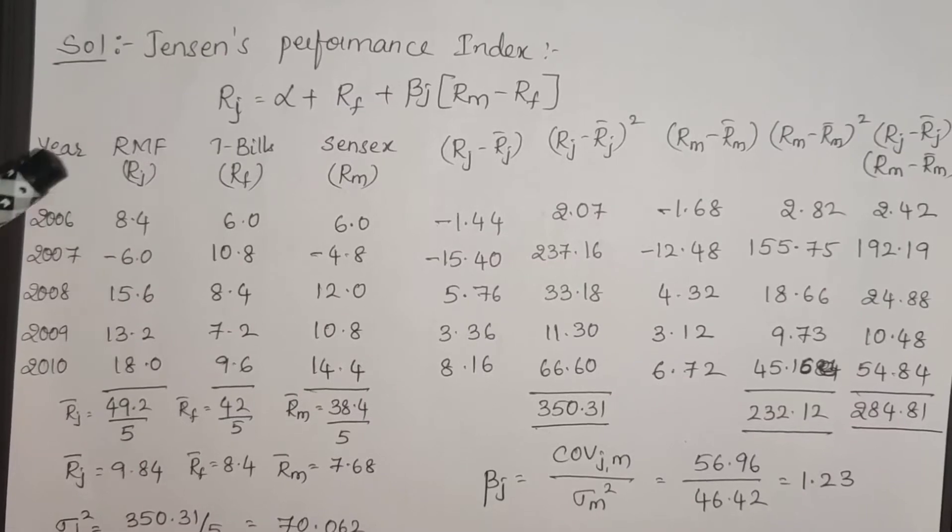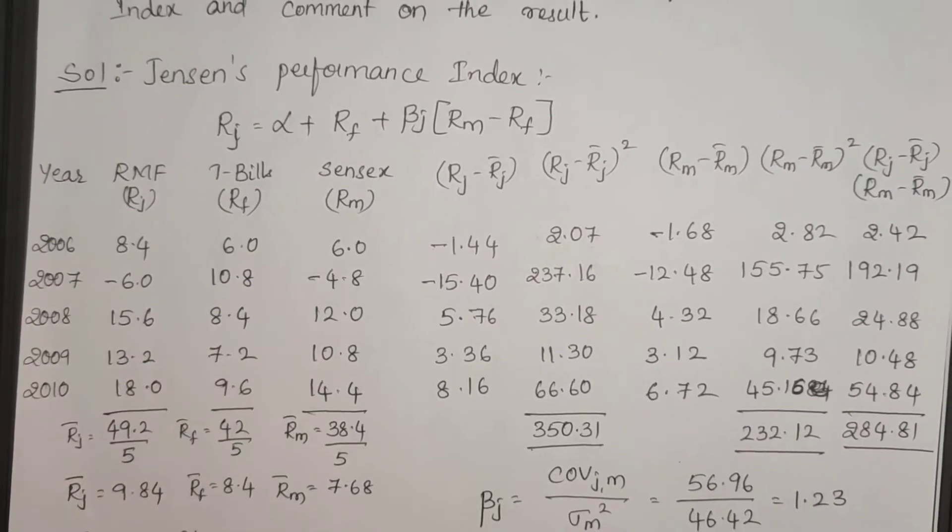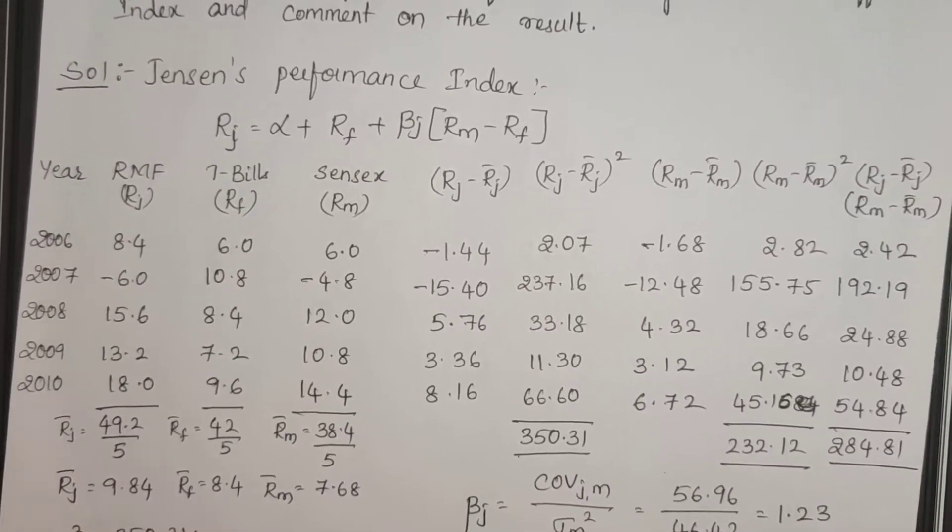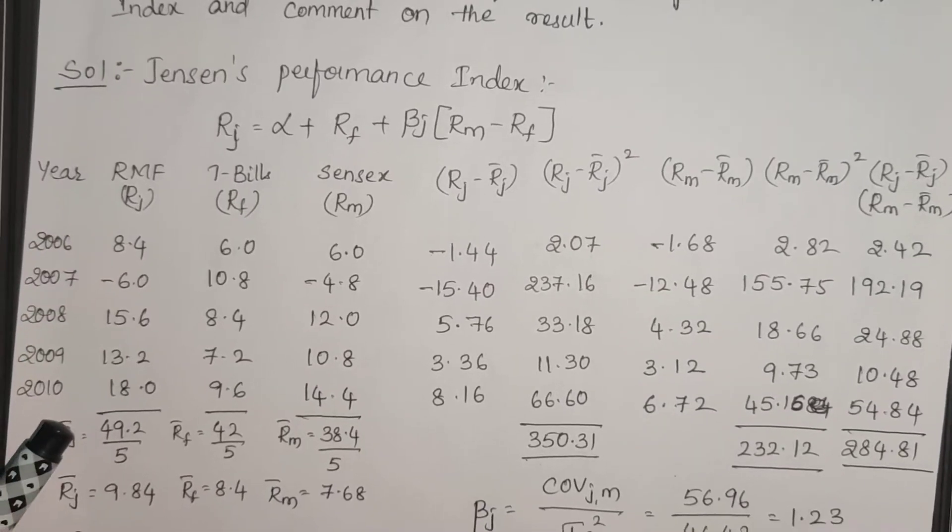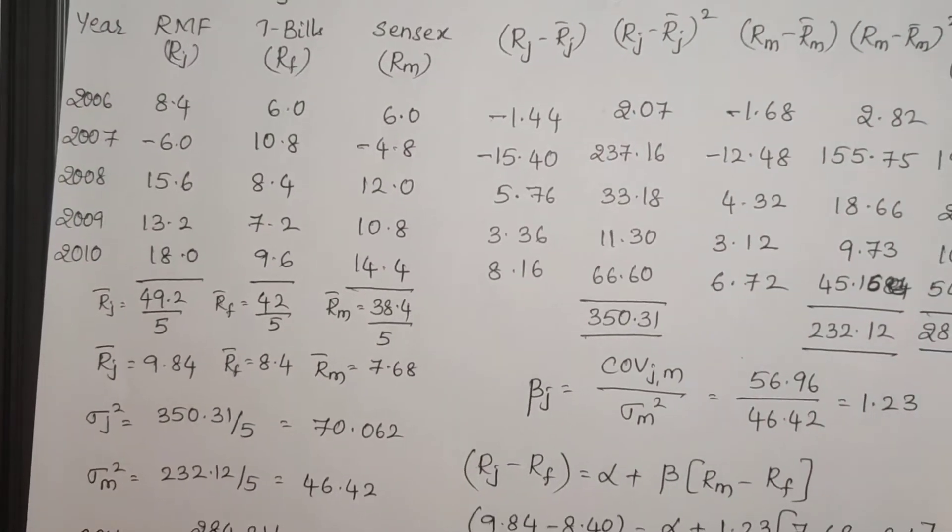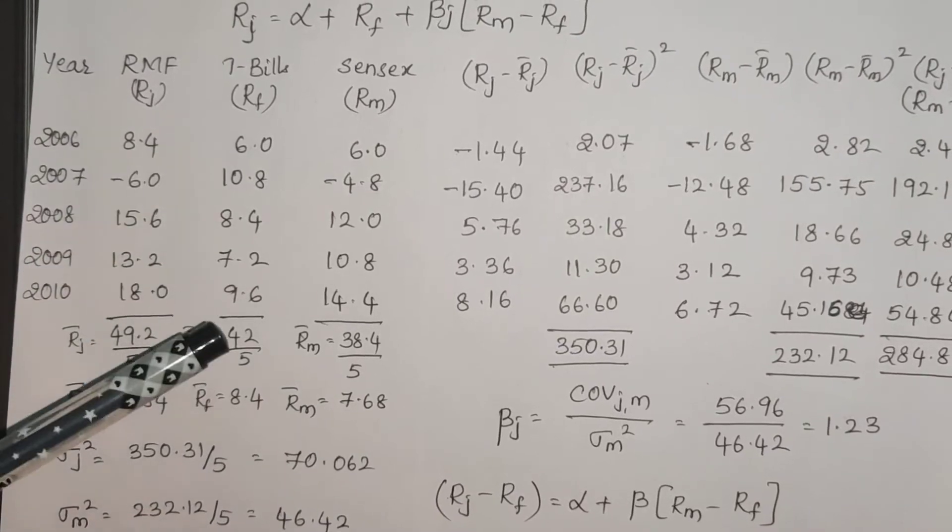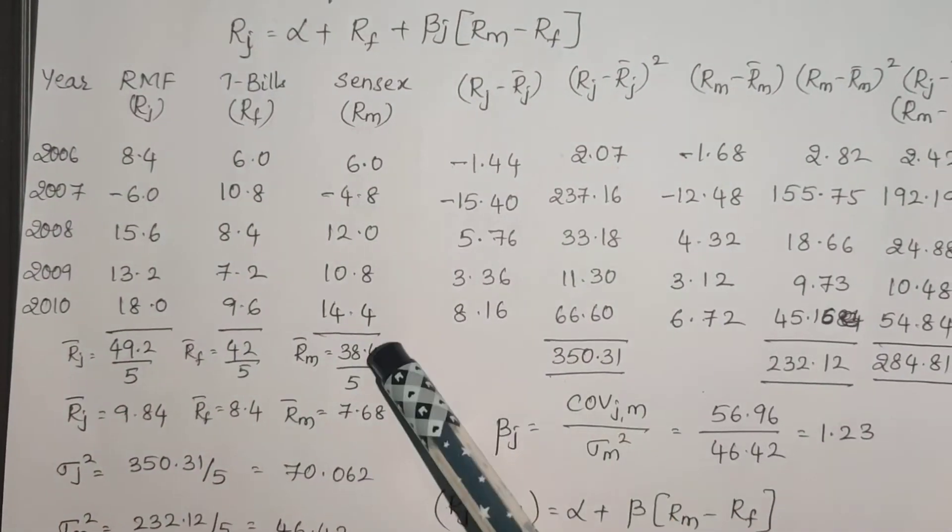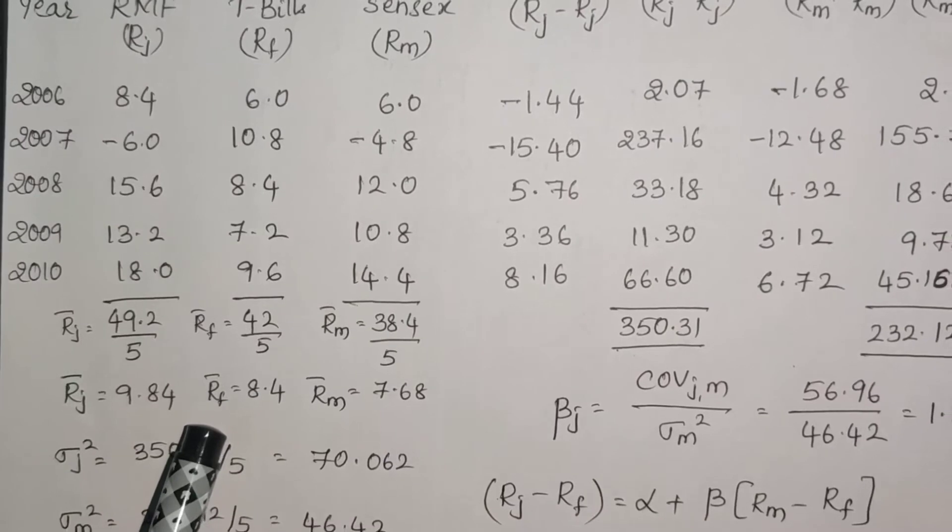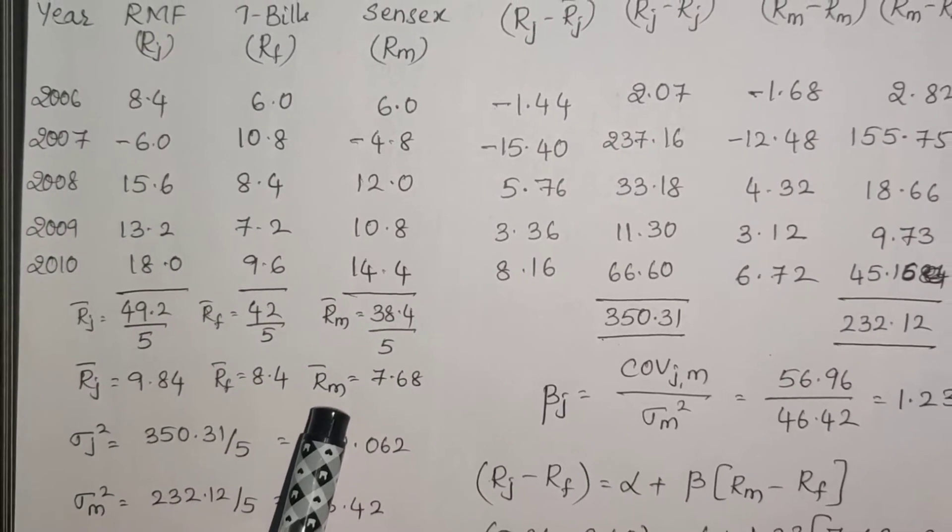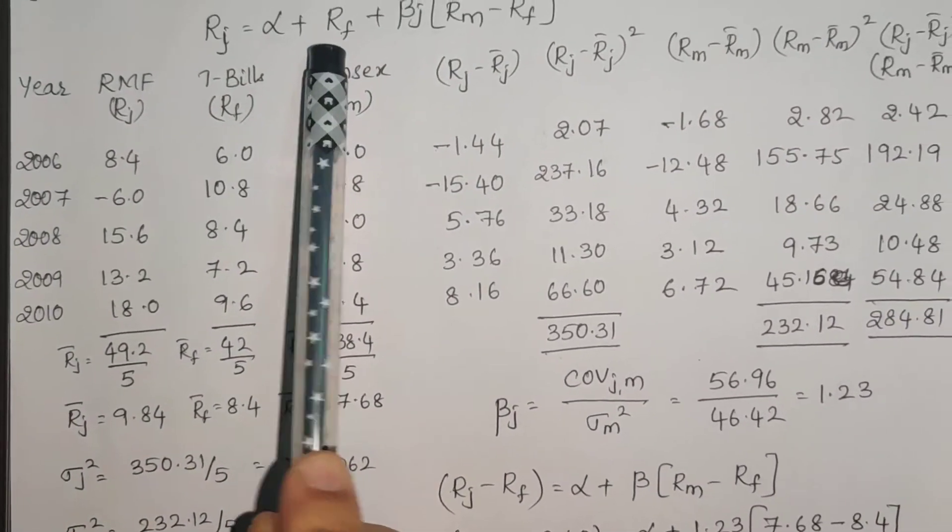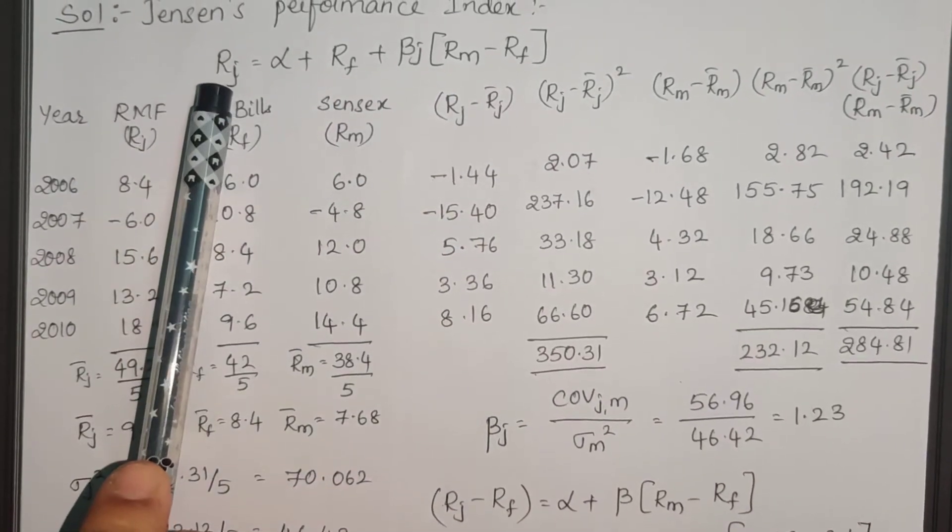Here 5 years of data has been considered and I have calculated expected return on portfolio, that is nothing but summation by number of years. RF same, summation by number of years, and RM adding all of them and dividing by 5. I got expected return on portfolio, expected risk-free rate of return, and expected market return. First step is completed.